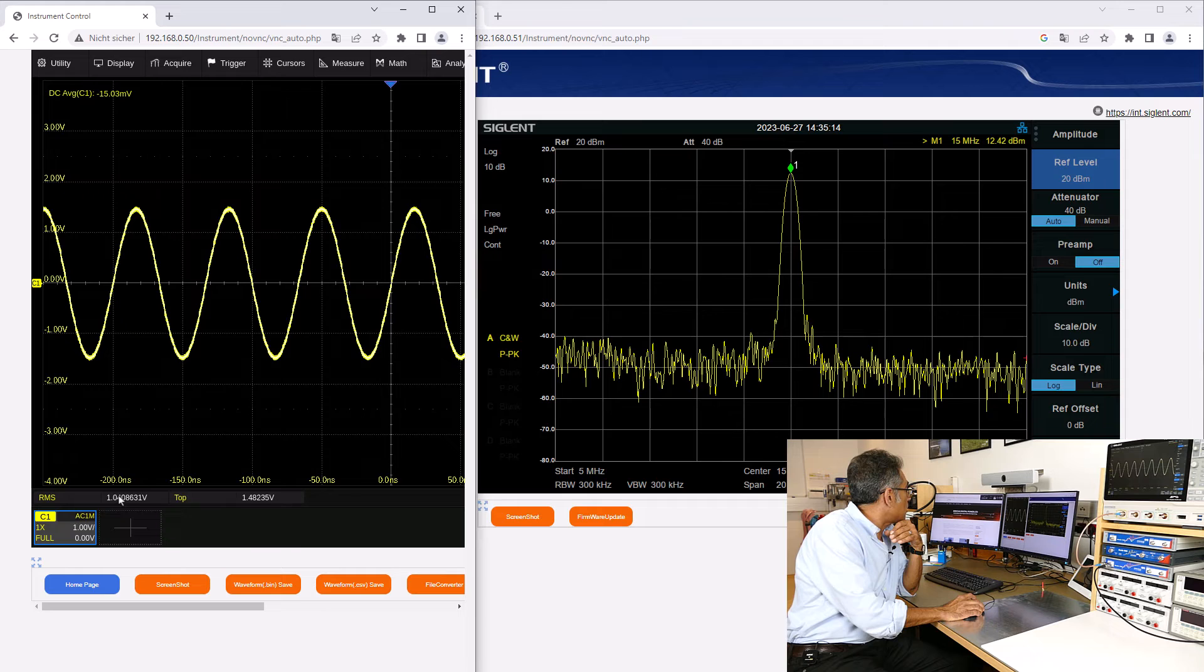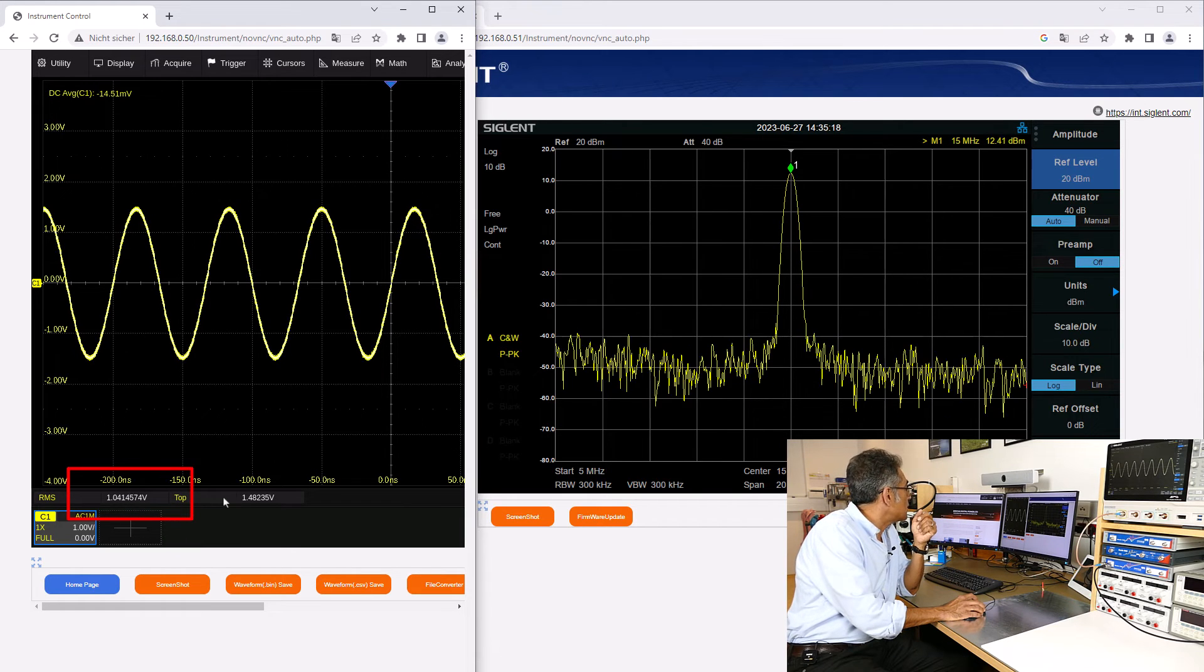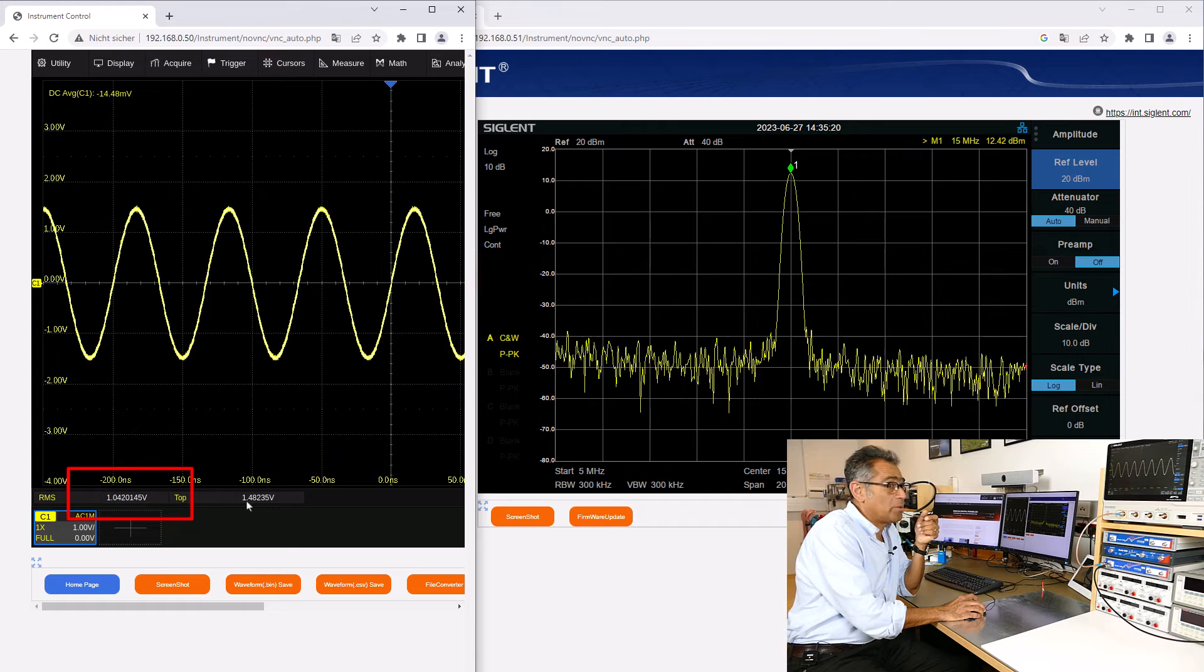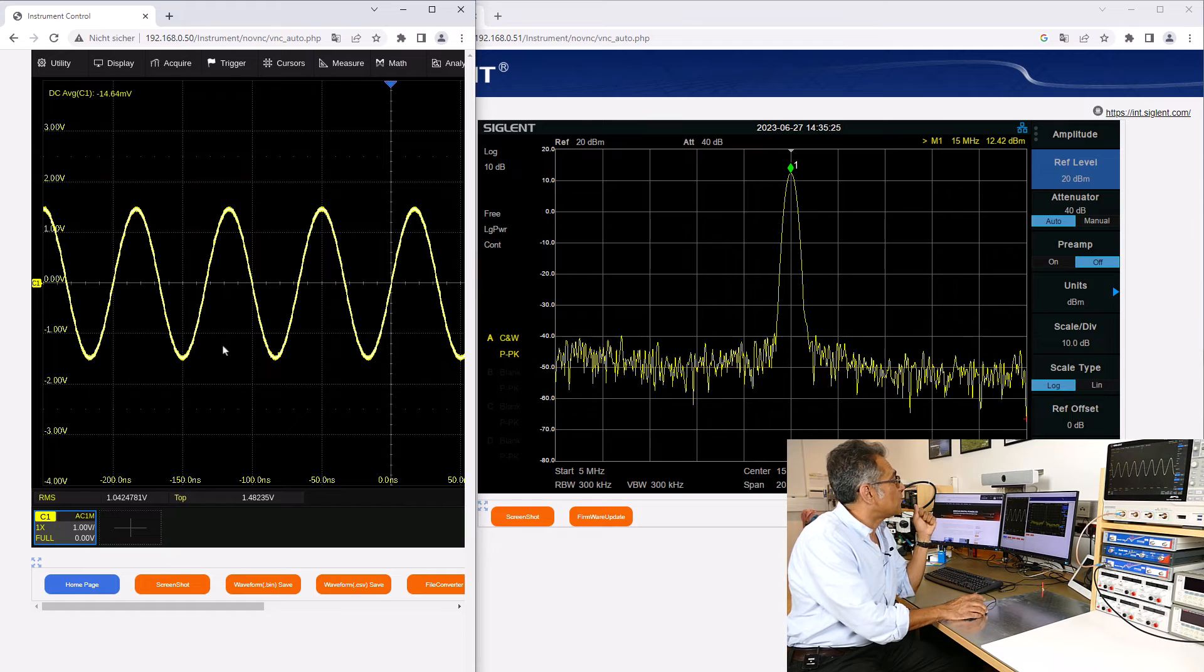and you can see here that the RMS value as displayed by the oscilloscope is exactly 1 V, and of course the peak of it is around 1.4.